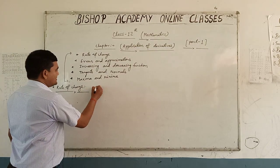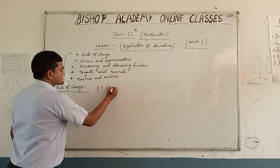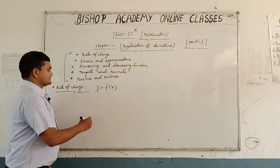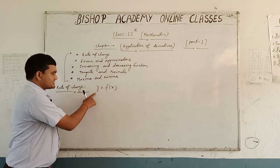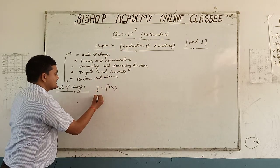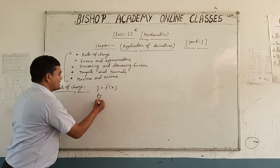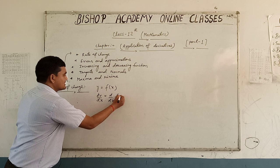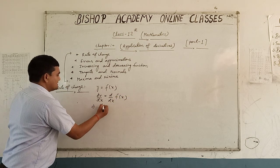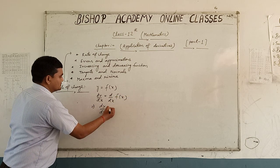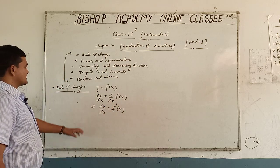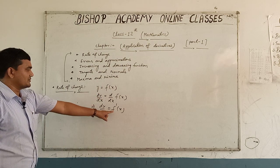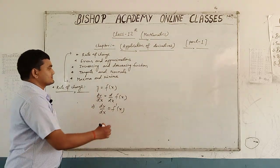Now students, if y is equal to f(x), means y is a function of x, then the rate of change of y with respect to x is given by dy by dx. This implies that dy by dx is equal to f'(x), meaning the rate of change of y with respect to x is f'(x).